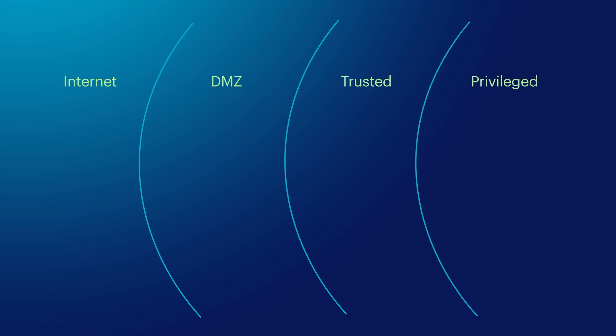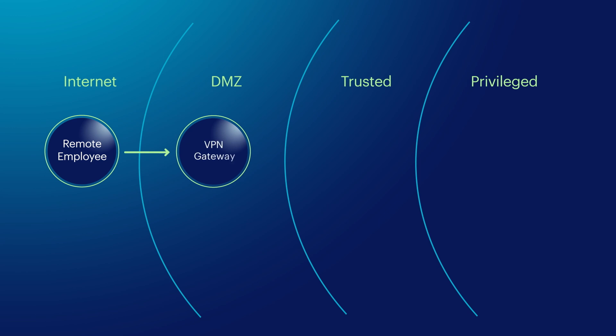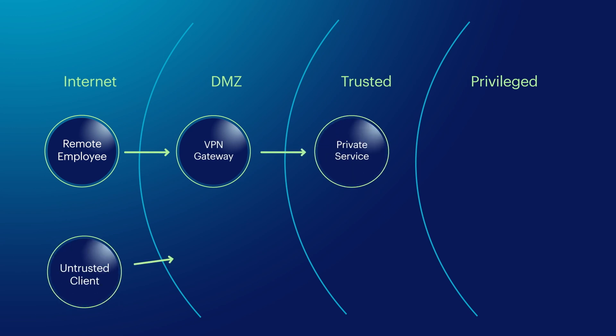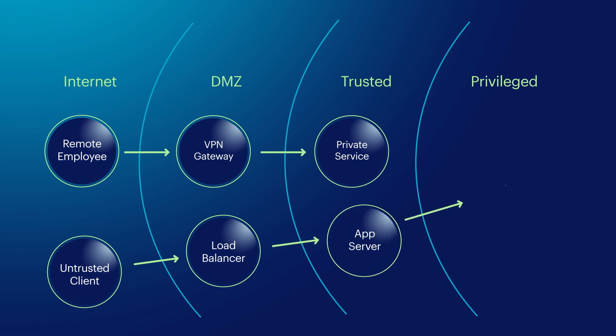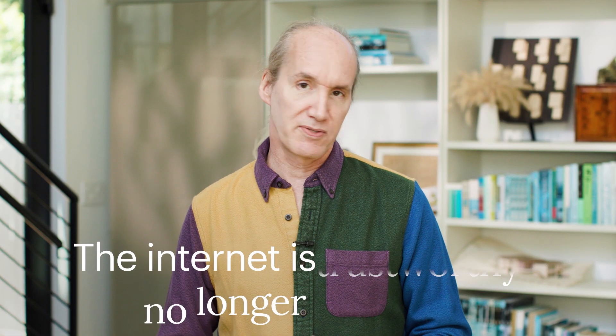Implicit trust was pervasive in early network designs. In fact, some of the original internet protocols, which we still use today, weren't designed with security in mind. Corporate networks were self-contained and the internet's reach encompassed only a few sites where everybody knew each other. Trust wasn't a problem back then. But now, the internet is no longer trustworthy and corporate networks are routinely penetrated, largely because they're all connected to the internet. Traditional network designs struggle to cope in hostile environments.